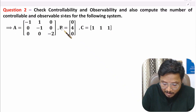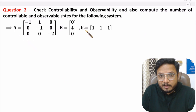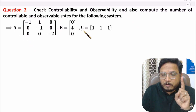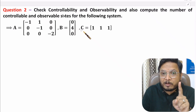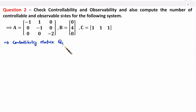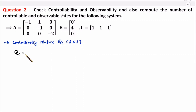We have matrices A, B and C. Based on these we can identify controllability and observability. First we need to identify the controllability matrix QC. The order of the controllability matrix is based on matrix A. Here matrix A is a 3×3 matrix, so QC will also be a 3×3 matrix, meaning the system has 3 states in total. The controllability matrix QC is calculated as [B, AB, A²B].